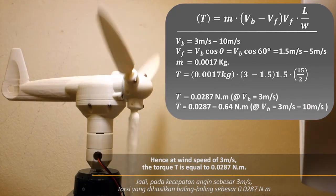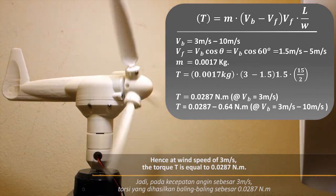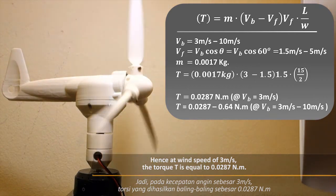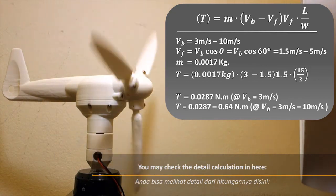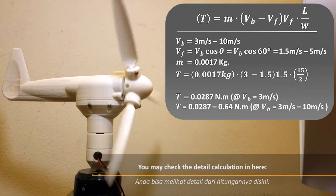Hence, at wind speed of 3 meters per second, the torque T is equal to 0.0287 Nm. You may check the detailed calculations in here.